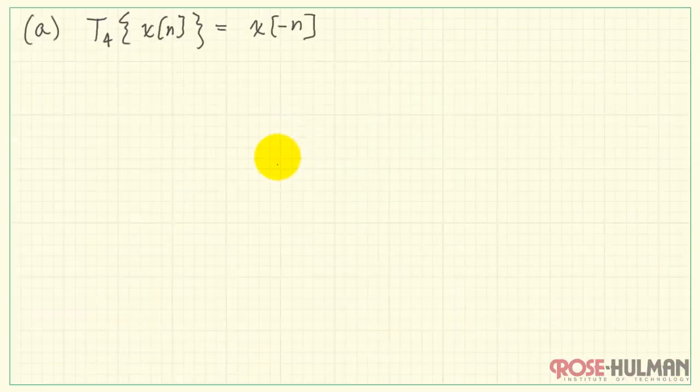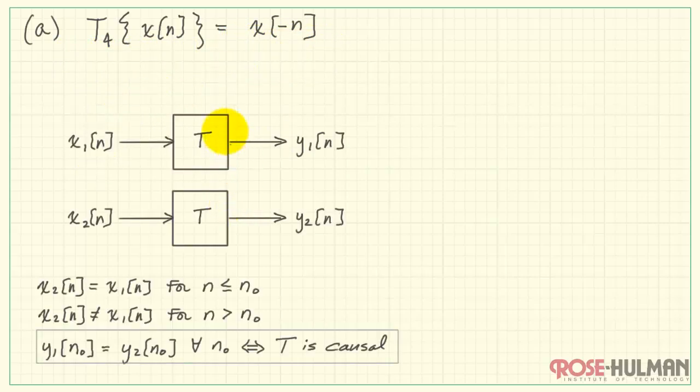All right, let's move on to the detailed solution. This is system T4, which is x of minus n. The system T4 is subject to two different inputs, x2 and x1, which are the same up to n0, and then diverge after that. We want to evaluate their outputs at time n0, and then determine whether or not they are equal.